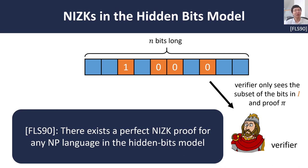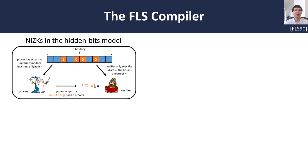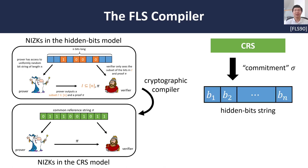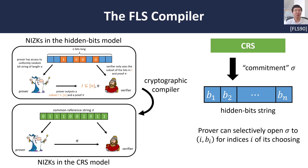However, this is an idealized model and does not translate to something that we consider cryptographically, like the CRS model. So the second ingredient is a compiler that takes any NIZK in this hidden bits model and compiles it into one in the CRS model. The cryptographic compiler roughly proceeds as follows. First, we have a common reference string, and this common reference string, in addition to a commitment chosen by the prover, will be used to define a hidden bits string. In addition, the prover can subsequently open the commitment to bits of its choosing and reveal them to the verifier, thus mimicking the operation in the hidden bits model.